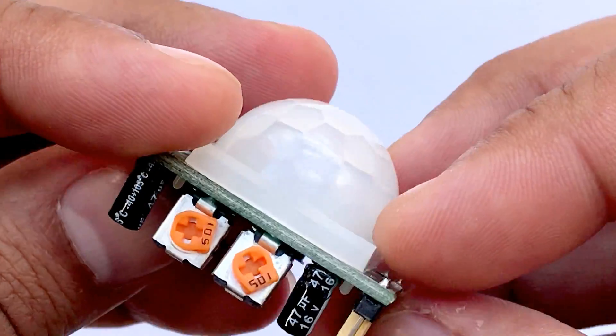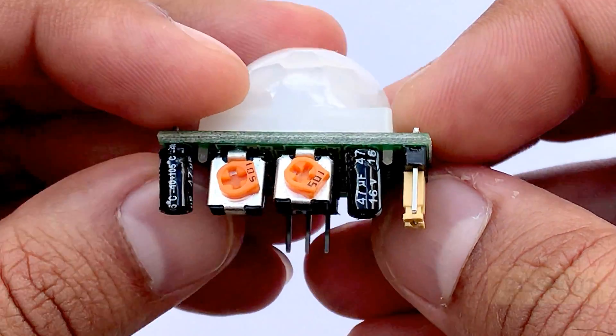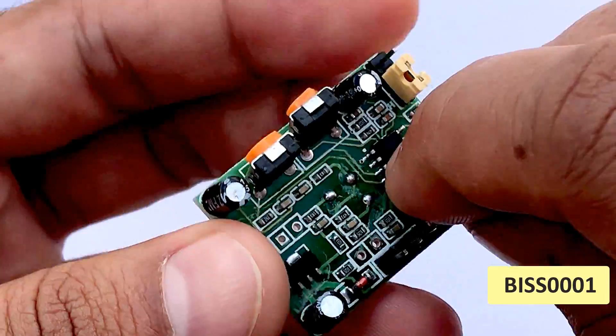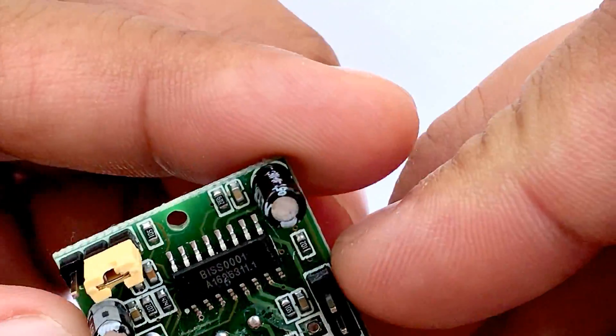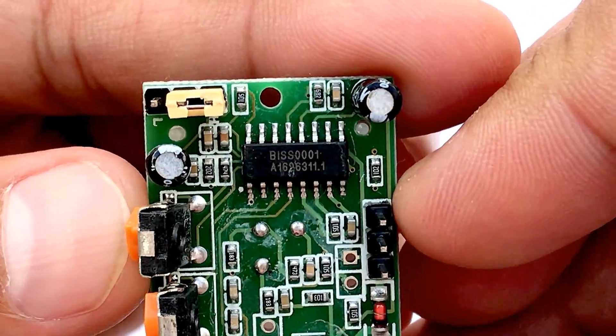The pinouts may vary between modules, so always triple check the pinouts. The BISS0001, or the Micropower PIR motion detector IC, gets the output from the sensor, and after doing some minor processing, it produces the digital output.